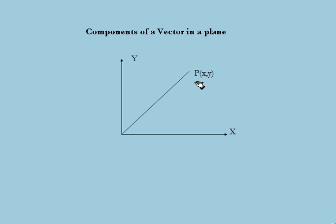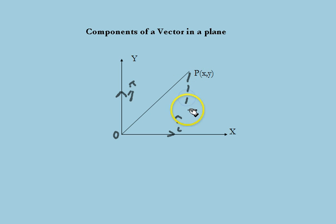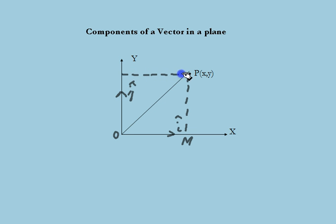Let us consider a point P with coordinates x, y in the coordinate plane x-O-y. Here vector i and vector j represent the unit vectors along x and y directions. From P we draw PM which is perpendicular to Ox. Thus we have PM as this line. Similarly we can draw another line PN perpendicular to Oy, as shown. We can then substitute OM as x and ON as y.